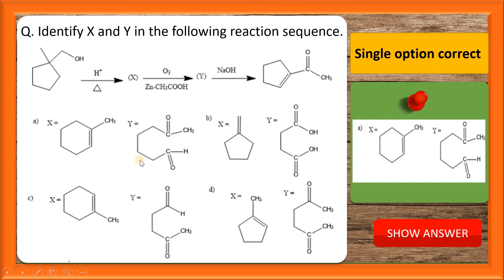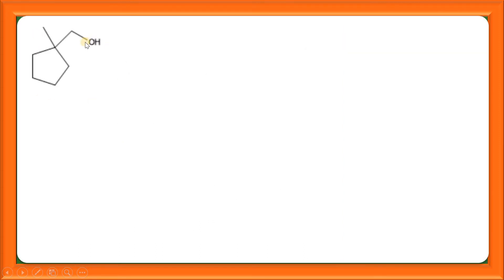Let us see the detailed solution for this question. This is the reactant given, it is an alcohol. Under acidic condition, protonation of this OH will take place and the lone pair on the oxygen will attack on this H plus ion.